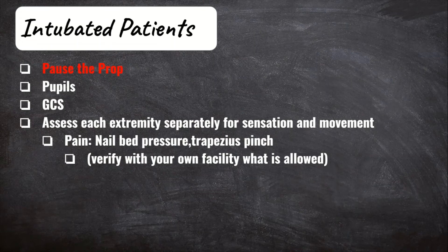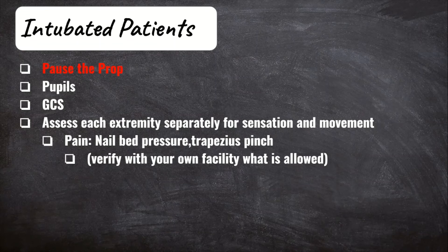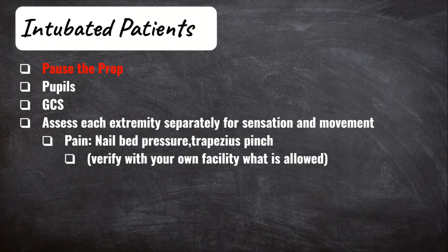Let's talk about doing an assessment on intubated neuro patients. The main challenge is that you're not going to get an accurate assessment if sedation is still on board. Even if the patient is sedated, it's still important to track trends. To get an accurate assessment — especially for your baseline — you should stop the propofol. For intubated patients, I'll assess their pupils, get a GCS score, and then assess each extremity separately for sensation and motor response. They may not be able to follow commands fully, but if you provide a noxious stimuli, they should at least withdraw or be purposeful, signaling that sensation is present. If they move that extremity, then movement is also present. In order to get a fully accurate assessment, sedation needs to be stopped — pause the propofol at the beginning of your shift to get a good baseline.